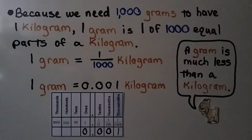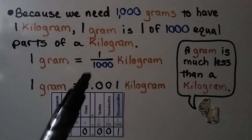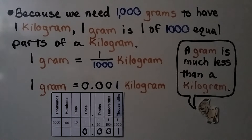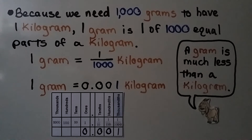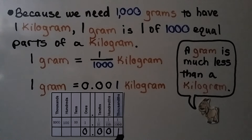Because we need 1,000 grams to have one kilogram, one gram is one of 1,000 equal parts of a kilogram — one one-thousandth of a kilogram. As a decimal, one gram is written as 0.001 kilograms, using the ones place, decimal point, tenths, hundredths, and thousandths place. A gram is much smaller than a kilogram.